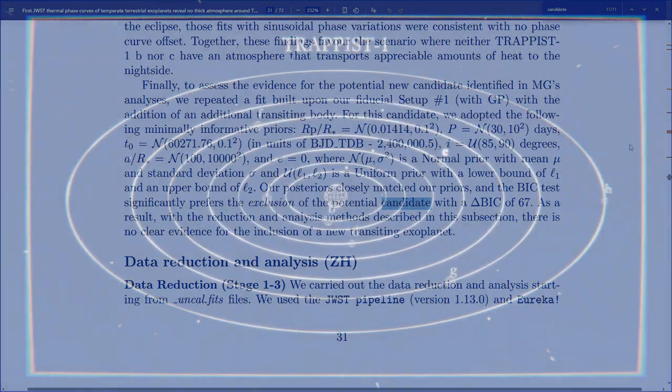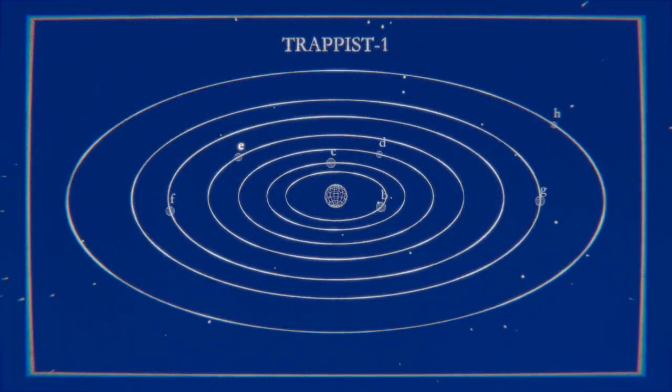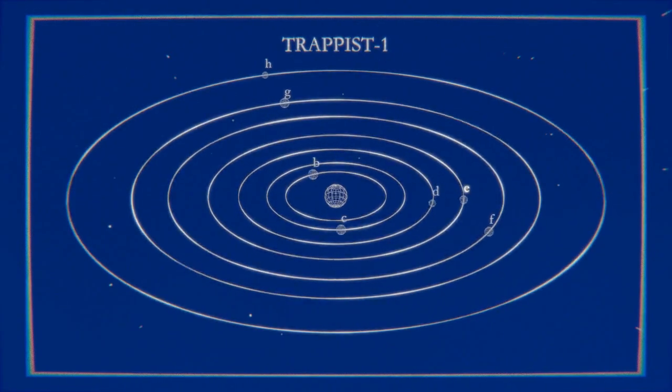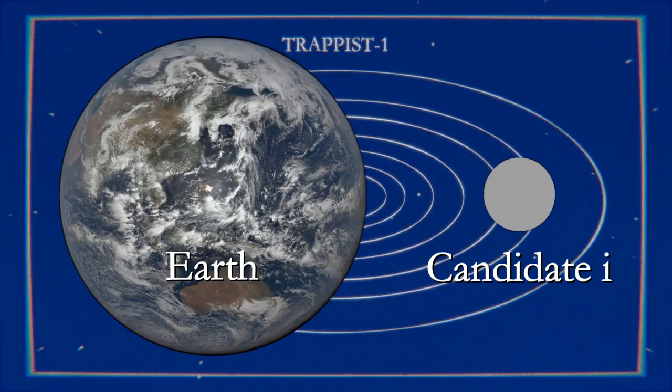Okay. However, we are not scientists. We are world builders. We get to do whatever the hell we want with this system. So, I ask of you guys. Do we want to add planet I? Just a small little guy out there in the outer solar system.